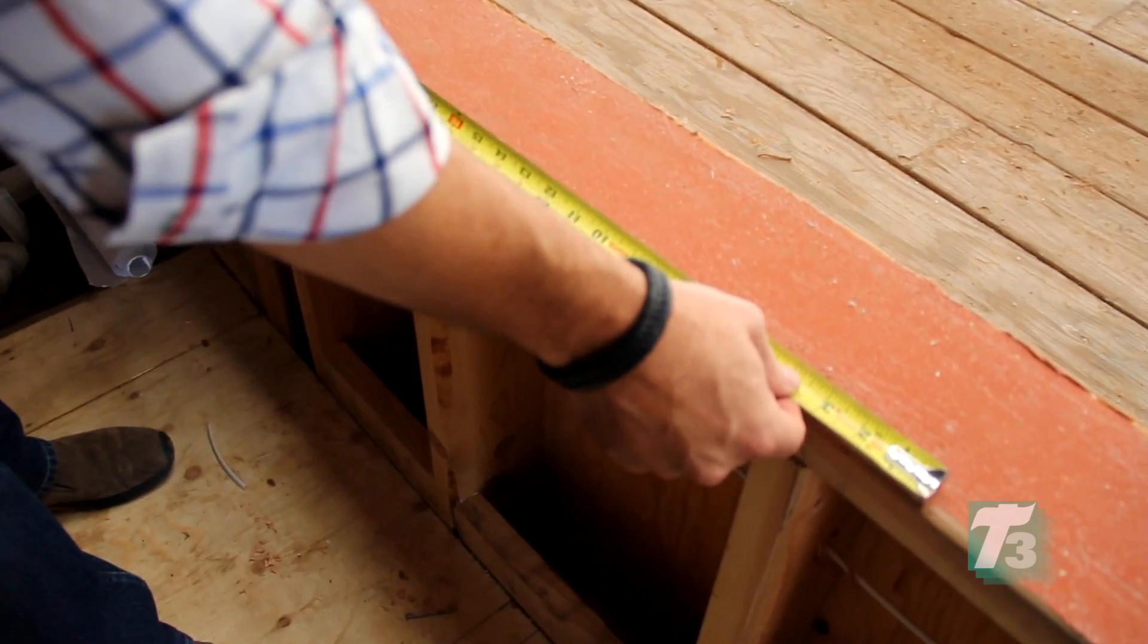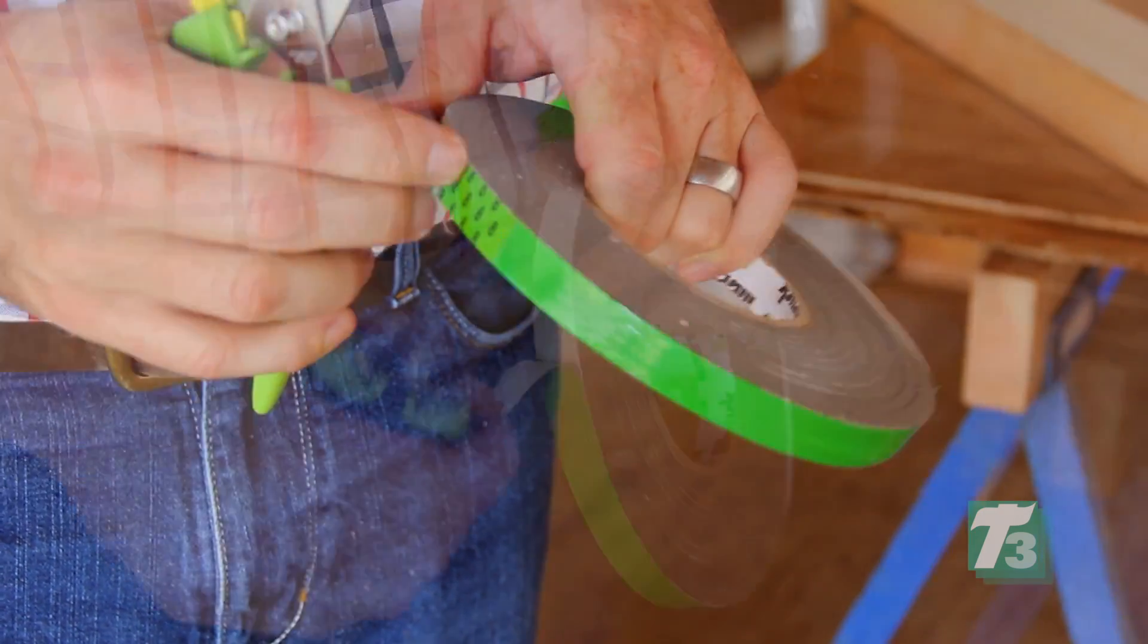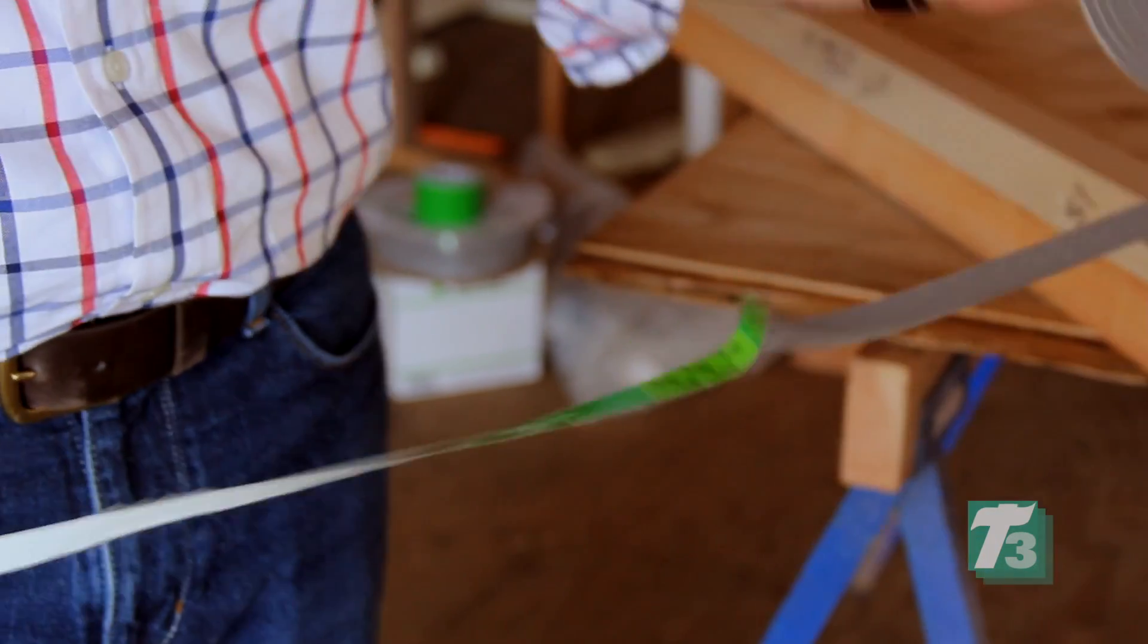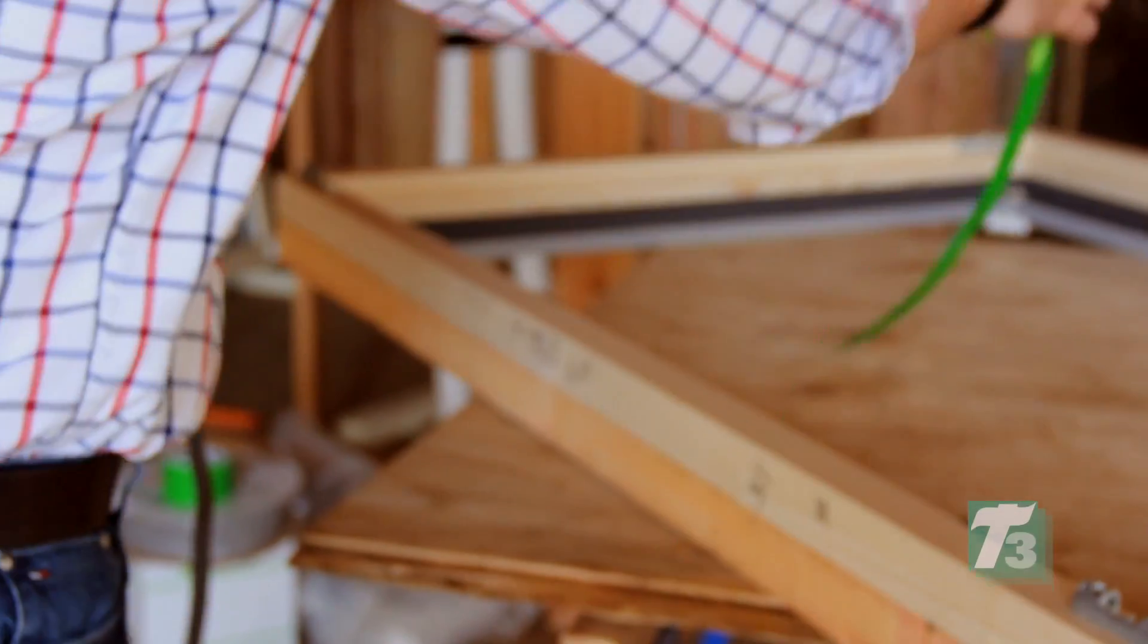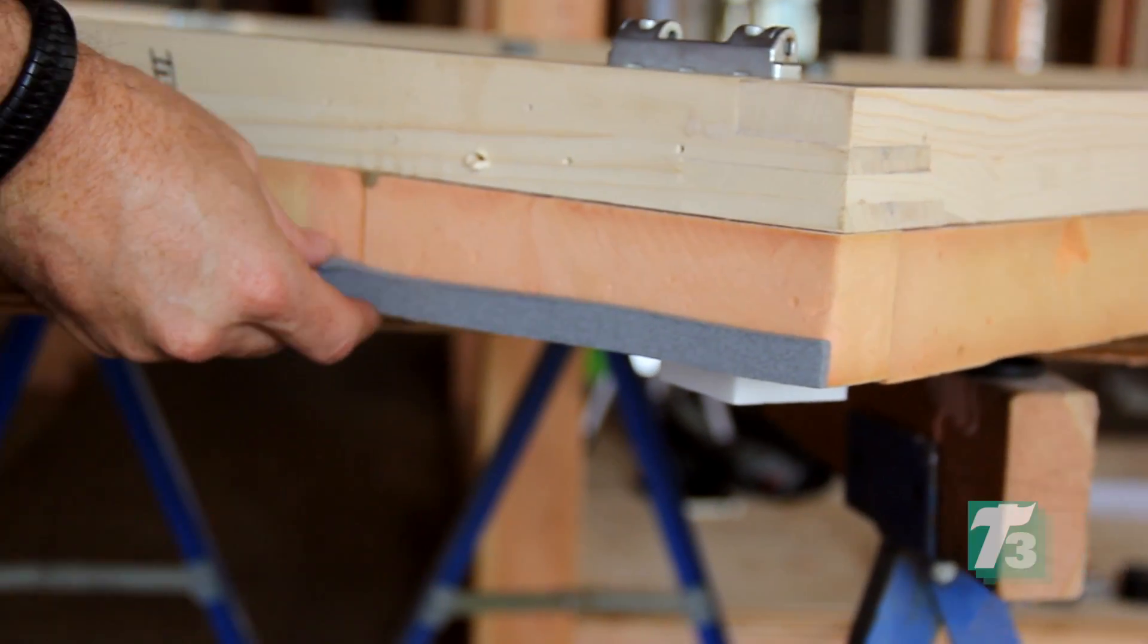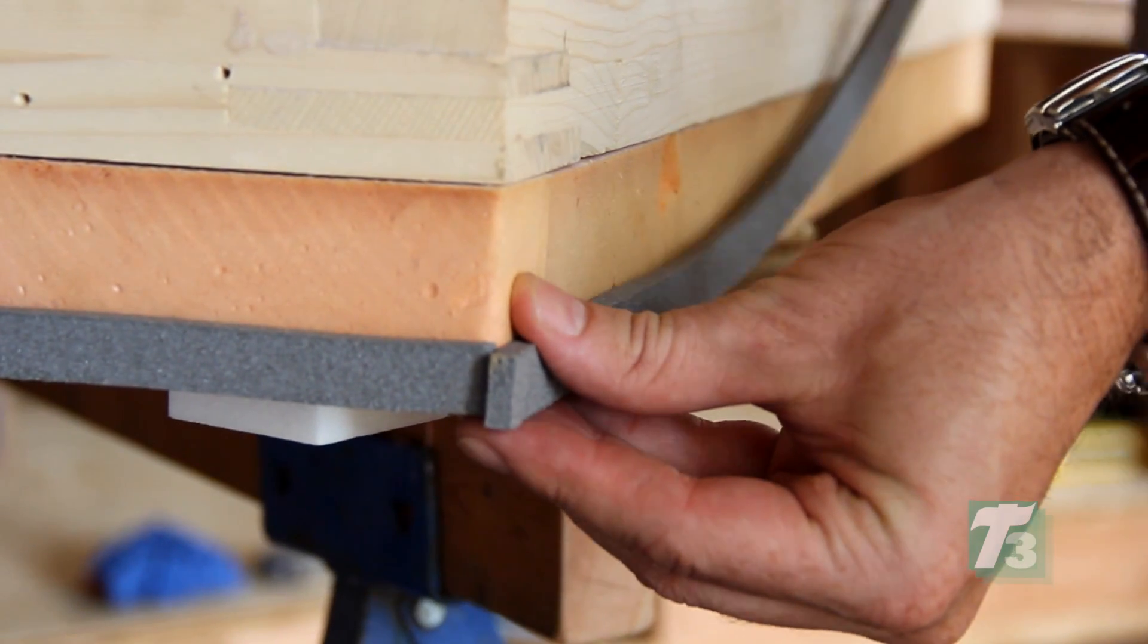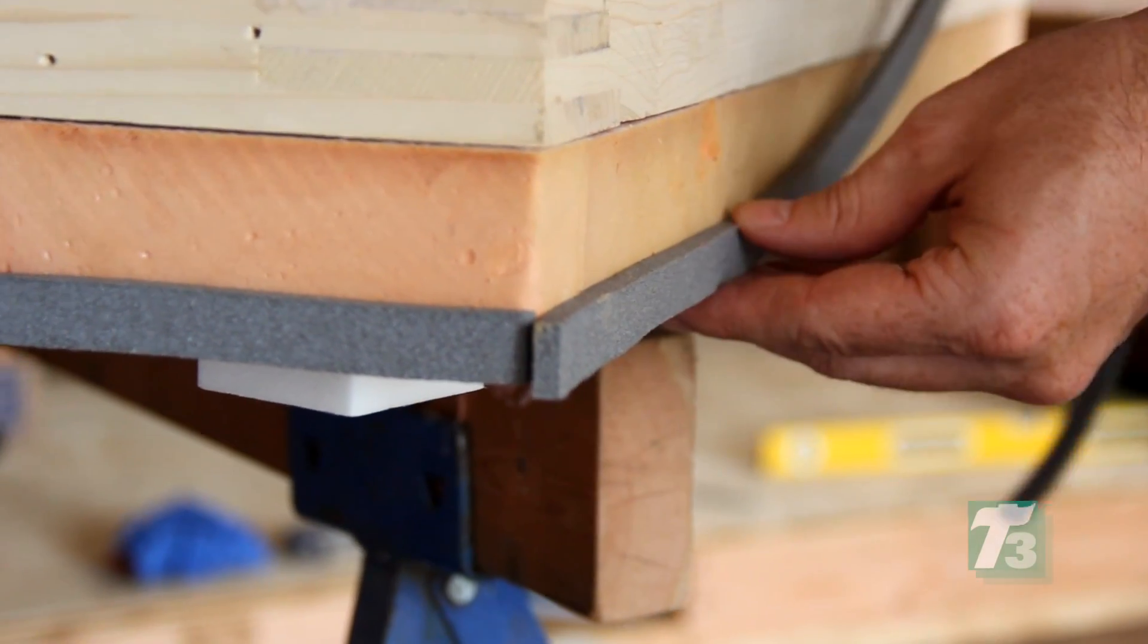Double check the rough opening size versus the window size to be sure you have the correct size Eco on hand. Unroll and save the green compression tape. It'll come in handy later. When installing the Eco, make sure it's in a relaxed state. Never stretch the product into place. Always add 5% to all measured lengths. Let Eco expand to the exterior.